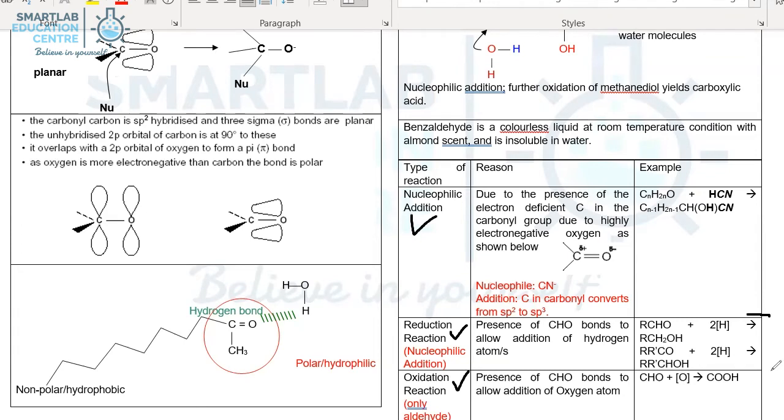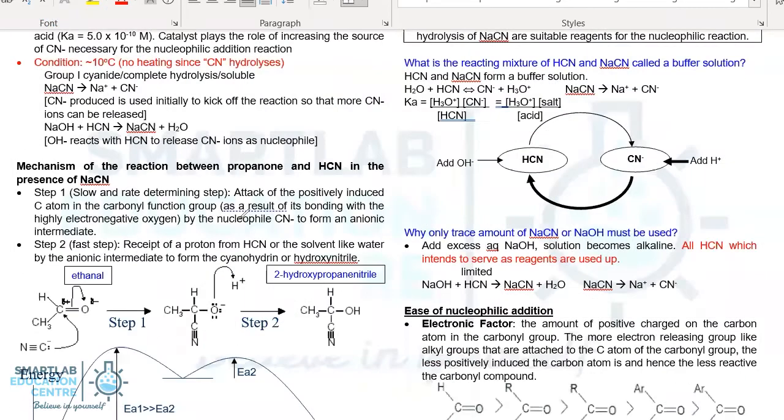Remember previously in the chapter on alcohol, we highlighted in the section where we discussed the oxidation of alcohol that ketone and aldehyde sits between alcohol and carboxylic acid, where carboxylic acid is the most oxidized form, while alcohol is the most reduced form. So therefore, aldehyde could be reduced to form 1 degree alcohol, and ketone can be reduced to form 2 degree alcohol, while aldehyde can be oxidized to form carboxylic acid.